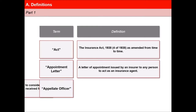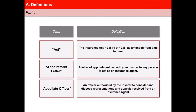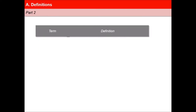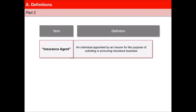'Appellate Officer' means an officer authorized by the insurer to consider and dispose representations and appeals received from an insurance agent. Fourth, 'Insurance Agent' means an individual appointed by an insurer for the purpose of soliciting or procuring insurance business.